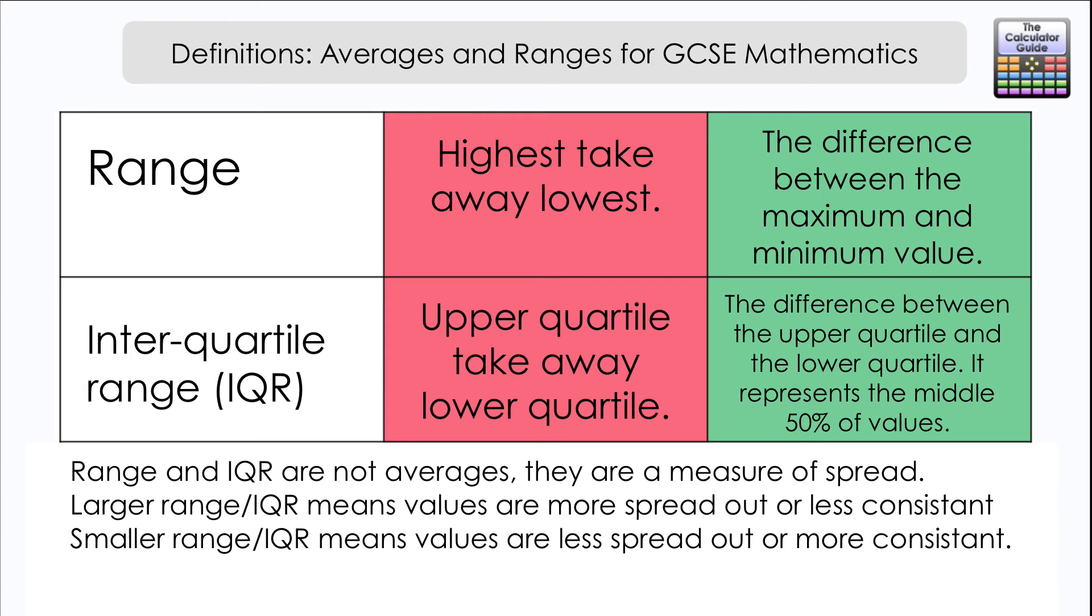Conversely, a small range or interquartile range means that the values are less spread out or more consistent. Consistent just means getting the same or very similar results time and time again. If you've got a small range, most of your results are tending to come out the same or being very close to the median or the middle value.